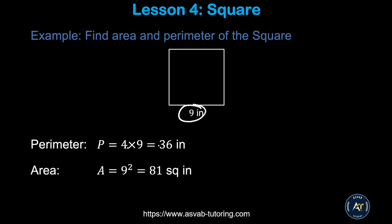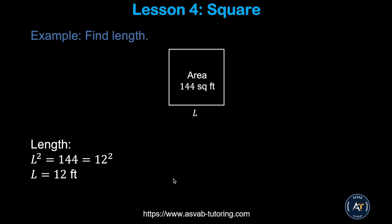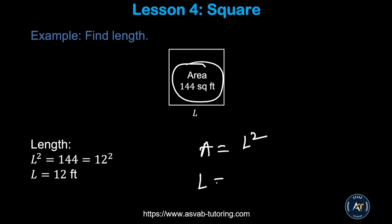Let's apply this formula to a problem. This square has one side equal to 9, so the perimeter is 9 times 4, which is 36. The area equals 9 squared, which is 81 square inches. In the next case, the area is given as 144, so you know area equals l squared, meaning l equals the square root of the area.